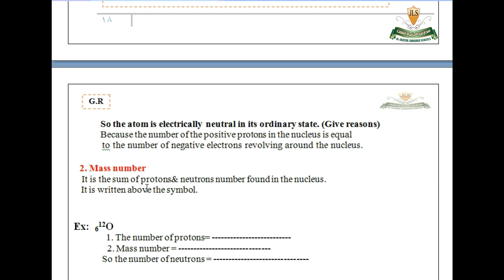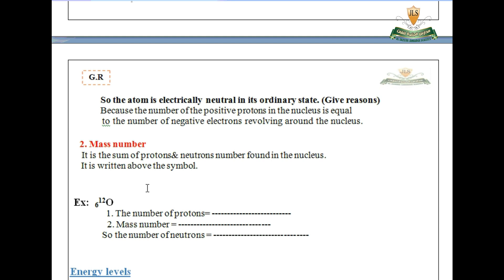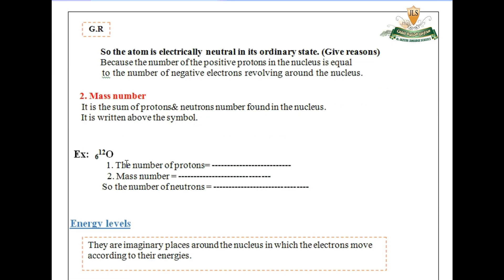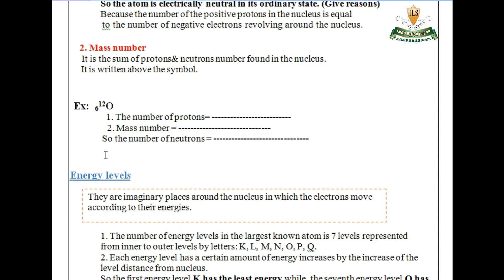Now let's go to the mass number. The mass number is the sum of the number of protons and neutrons in the nucleus, and it is written above the symbol. For example, in carbon: 6 is the atomic number and 12 is the mass number.